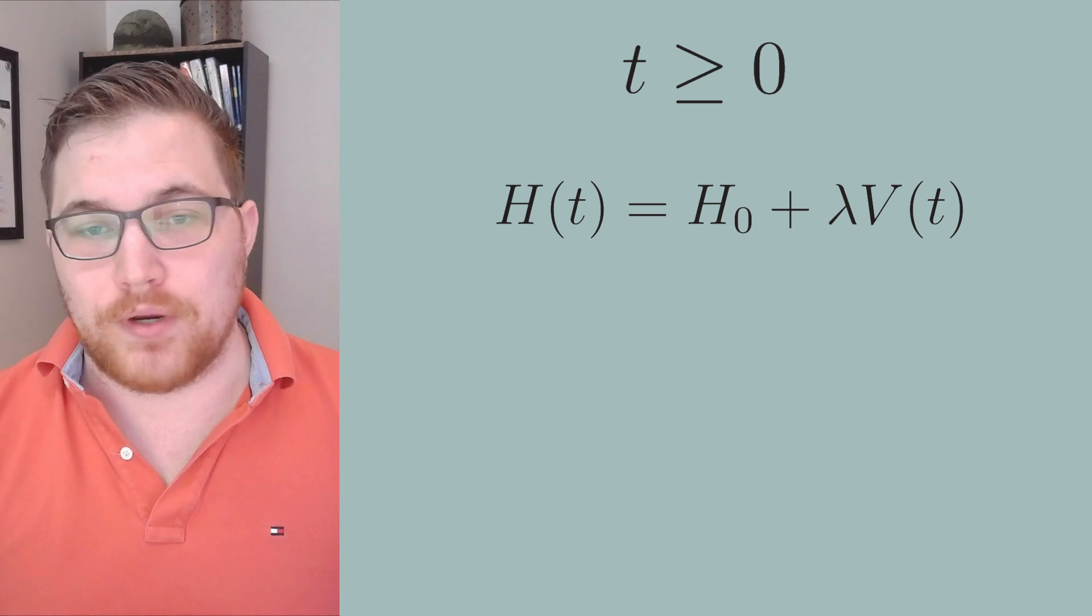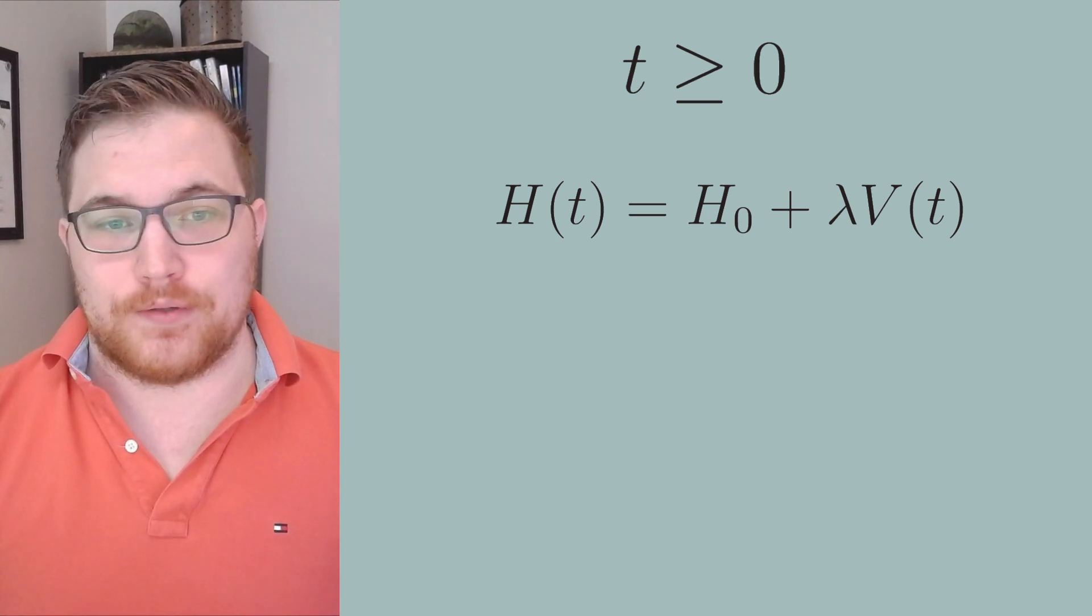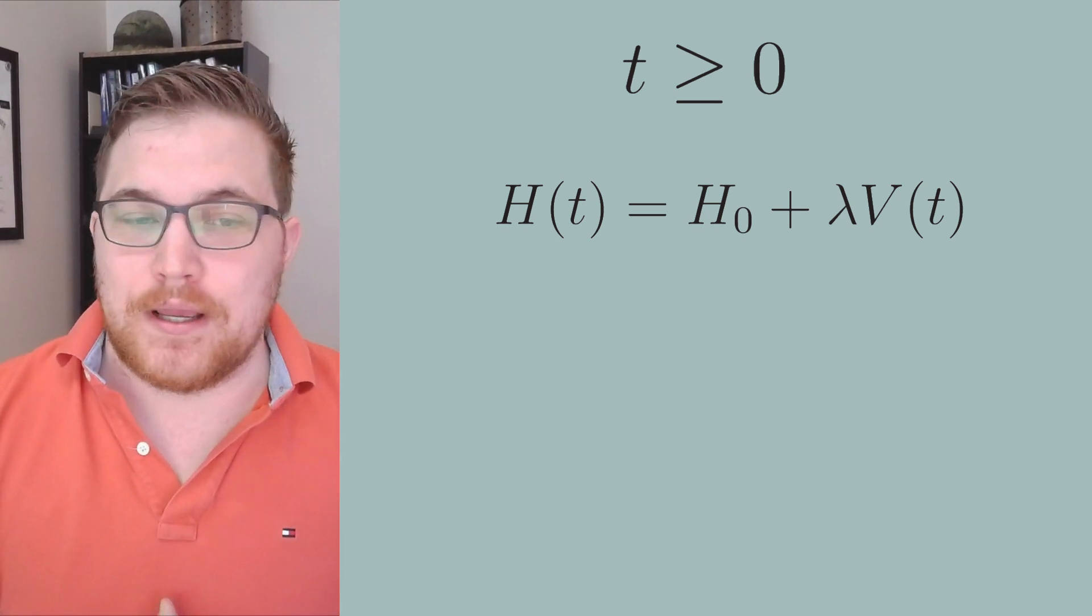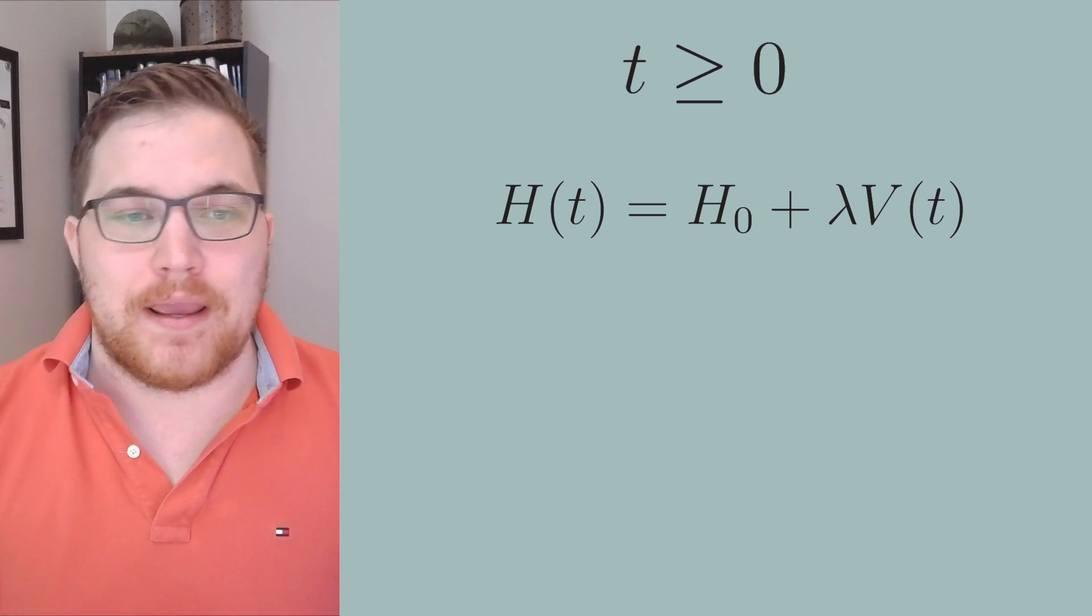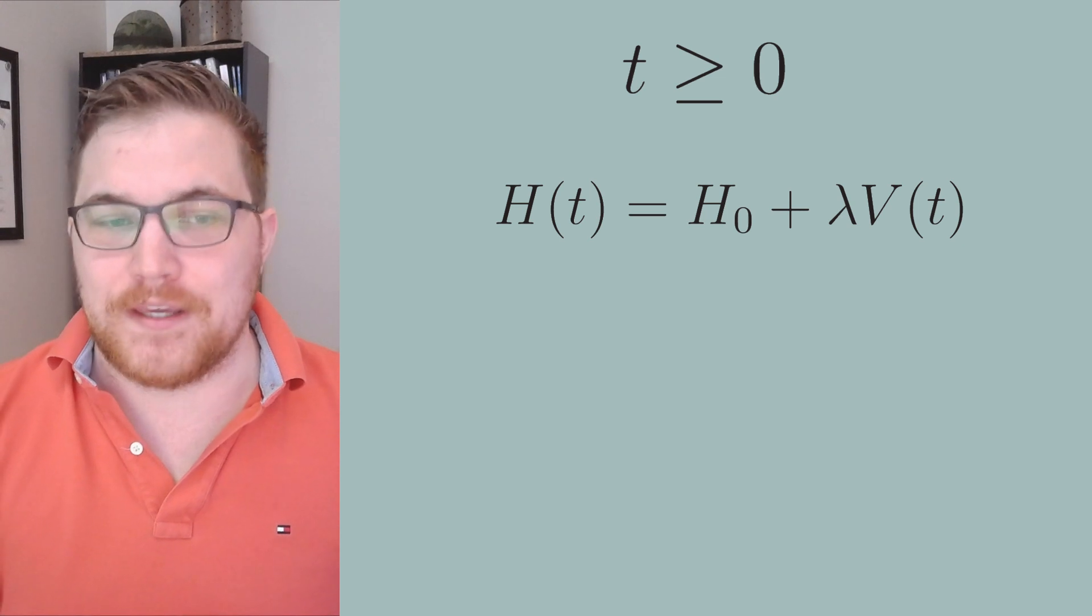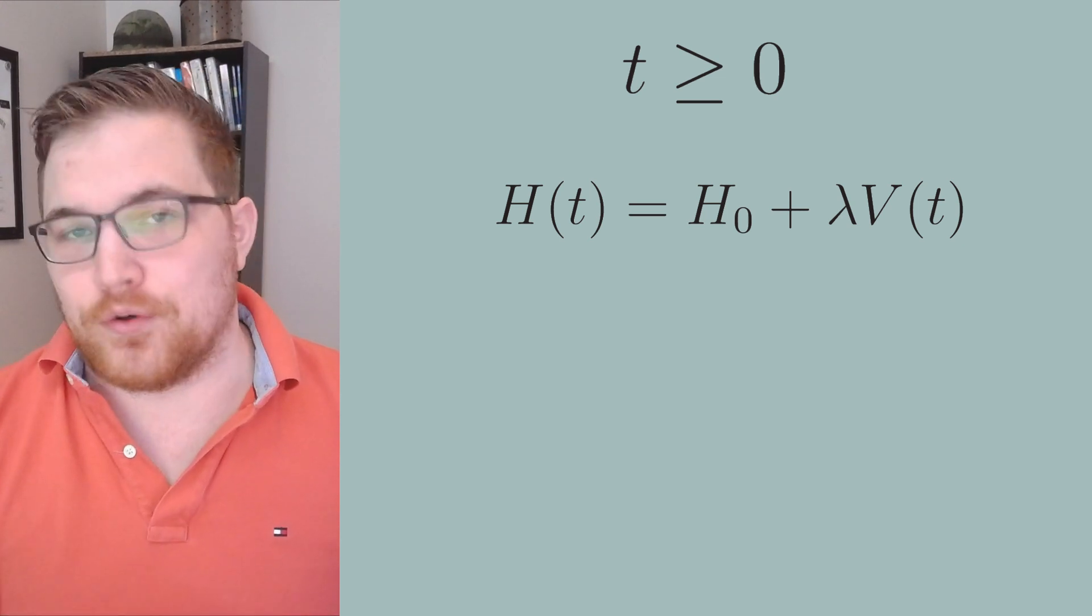We will write the new Hamiltonian as the following equation. Now as you might have guessed in the interaction picture, we are going to treat H-naught as the free Hamiltonian and lambda times v of t as the interacting Hamiltonian.